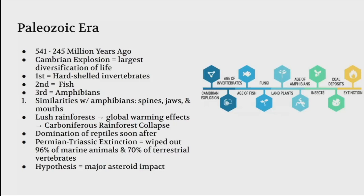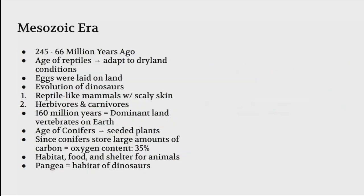The Mesozoic era is from 245 to 66 million years ago. This is the age of reptiles, and they adapt to the dry land conditions. Their eggs were starting to be laid on land, and this is how we come to the evolution of dinosaurs.